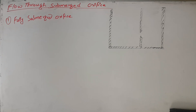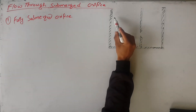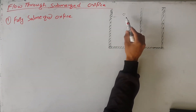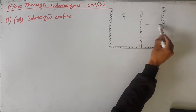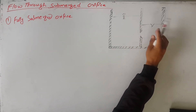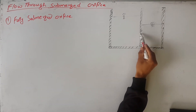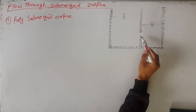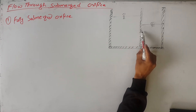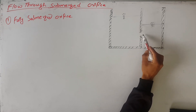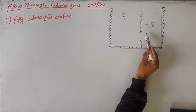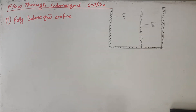A fully submerged orifice is one which has its whole outlet side submerged under the liquid, so that it discharges a jet of liquid into the liquid of the same kind. The liquid on the upstream side has a surface here and the downstream surface is here. This is the orifice, and it is submerged by the liquid. All of the boundary of this orifice is bounded by the liquid, so this is a fully submerged orifice.